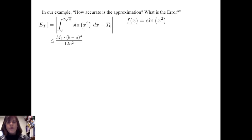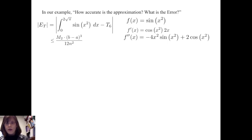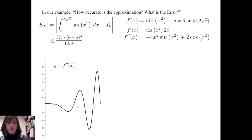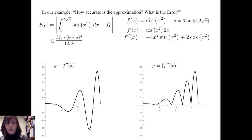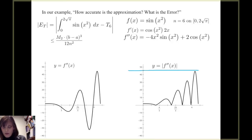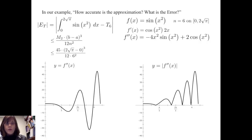To compute M sub 2, we note that f(x) = sin(x²), so f′(x) = cos(x²) times 2x, and f″(x) = −4x² sin(x²) plus 2 cos(x²). Graphing the absolute value of the second derivative on [0, 2√π], we see its maximum is just less than 45. Therefore we use M sub 2 equals 45. Plugging in: 45 times (2√π)³ divided by (12 times 36) gives an absolute error less than or equal to 4.65.